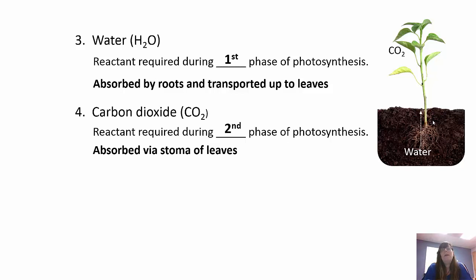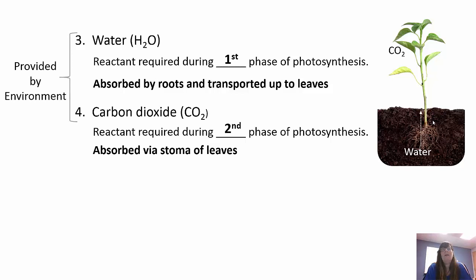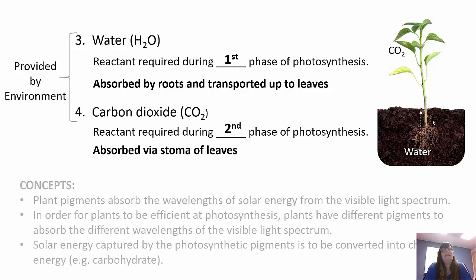The stomata are the little holes on the back of leaves that open and close so that carbon dioxide can get in and oxygen can get out. Water and carbon dioxide are provided by the environment. Solar energy is provided by the environment, and the pigments are within the plants.